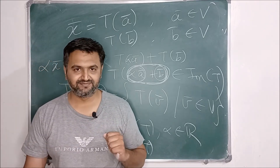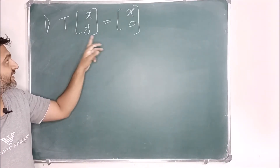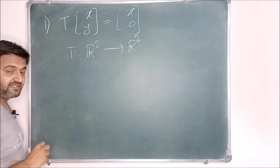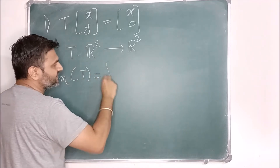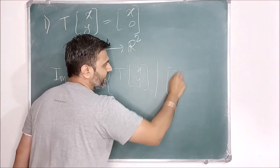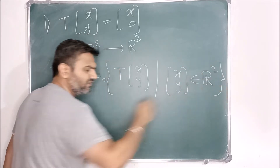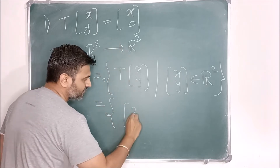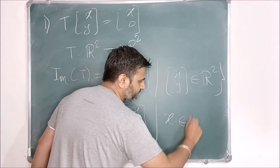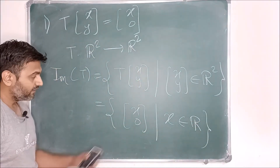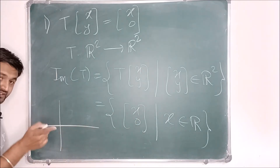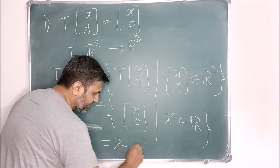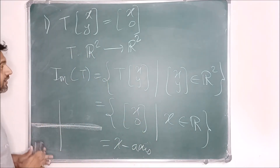Let's see some examples. The first is a linear map T: R²→R² taking vector (x, y) and defined as T(x,y) = (x, 0). The image set is all T(x,y) where (x,y) is in R², which gives vectors of the form (x, 0) — vectors where the second component is zero. This is nothing but the x-axis. So the image set of this transformation is the x-axis.